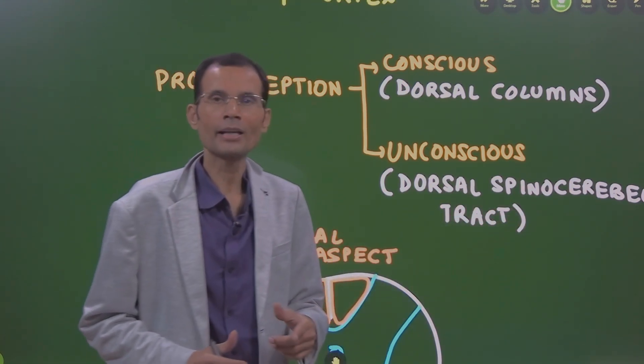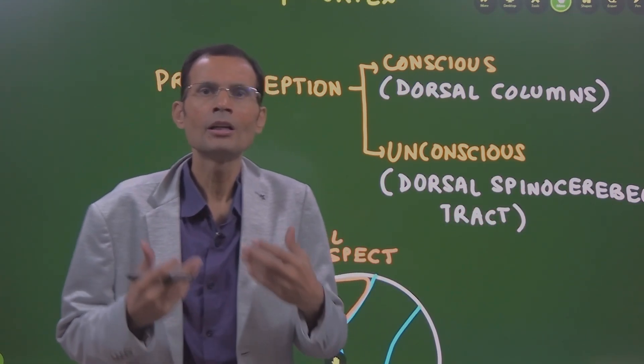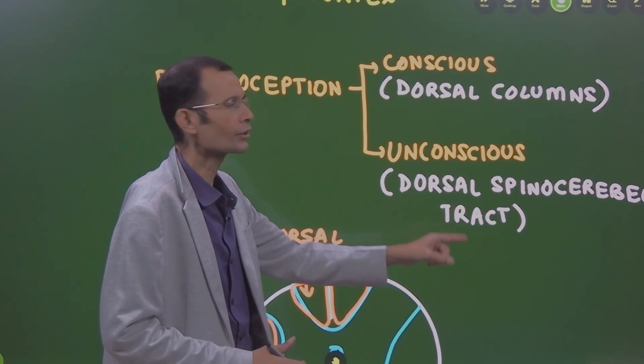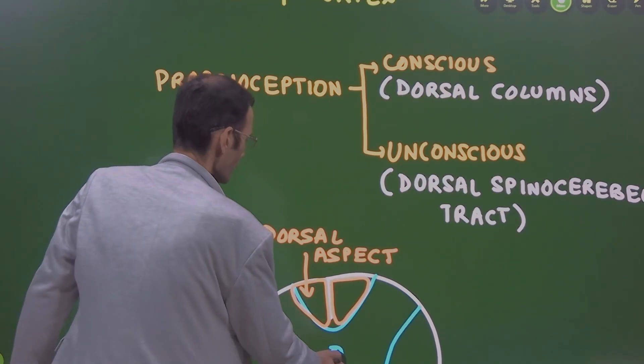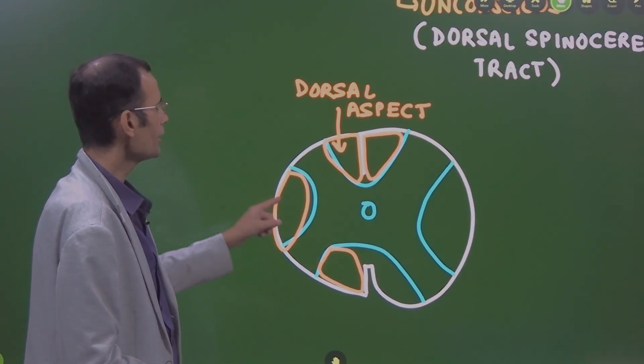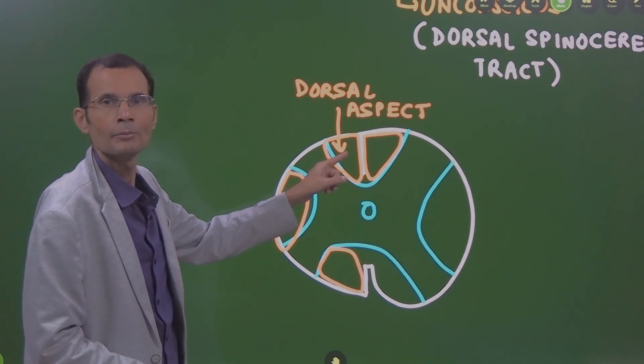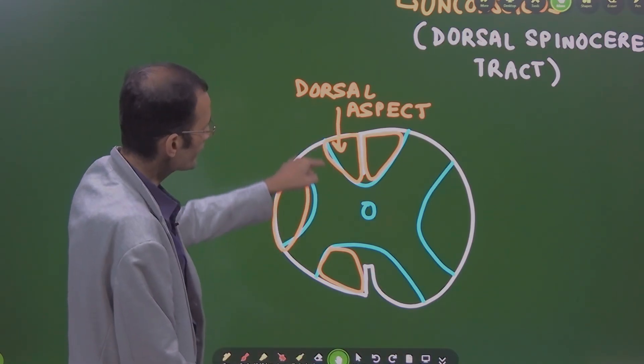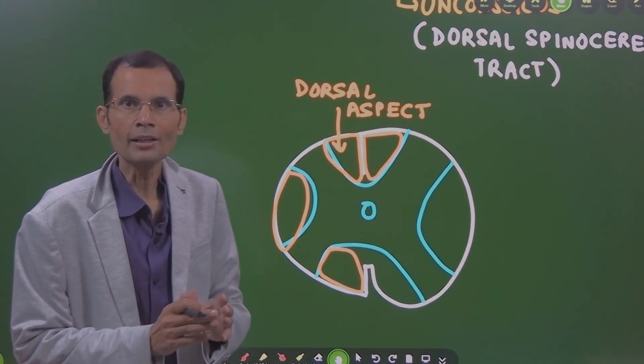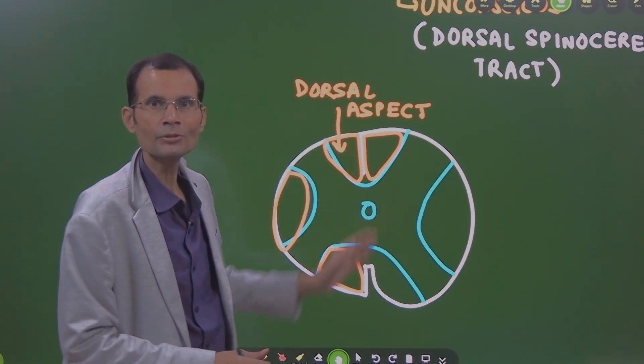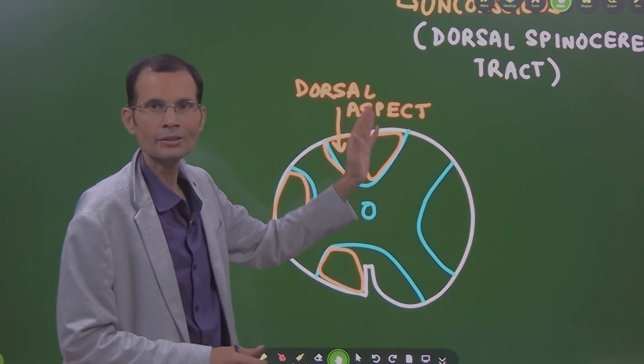Dorsal spinocerebellar tract carries unconscious proprioception particularly from lower parts of the body but nevertheless, it is the dorsal spinocerebellar tracts. So you can see here anterior, lateral and posterior or dorsal white columns. This is the area from where the fibers ascend upward whether it is dorsal white columns or dorsal spinocerebellar tract.